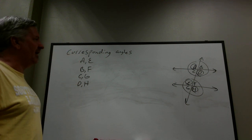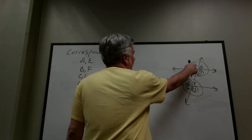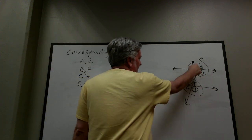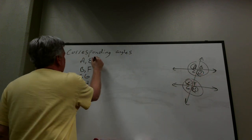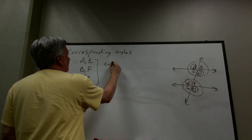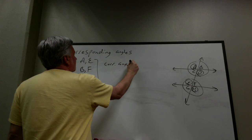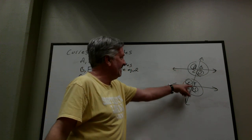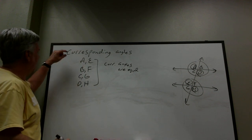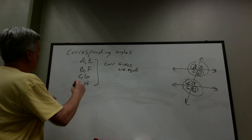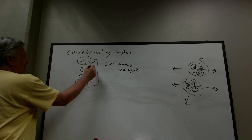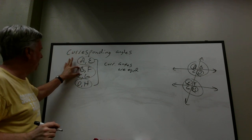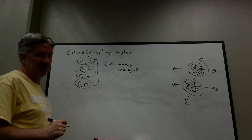A and E are the same, D and H are the same, and so on. In fact, A, D, E, H are all the same measure, and B, C, F, G are all the same measure. But if you look at them as pairs: A and E are the same, B and F are the same, C and G, and D and H — they're all the same measure.